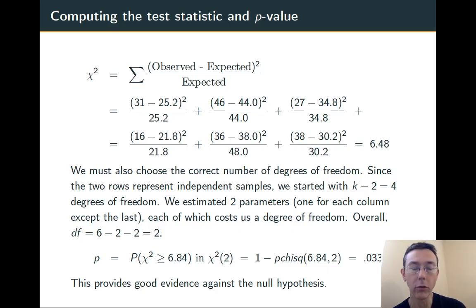We compute the p-value as usual in a chi-squared distribution. Probability that chi-squared is greater than or equal to that 6.84 that we got in chi-squared of 2. And we get 0.033. So this provides good evidence against the null hypothesis. We have good reason to believe that, in fact, these two groups, young people and old people, are different in their opinions about working from home.